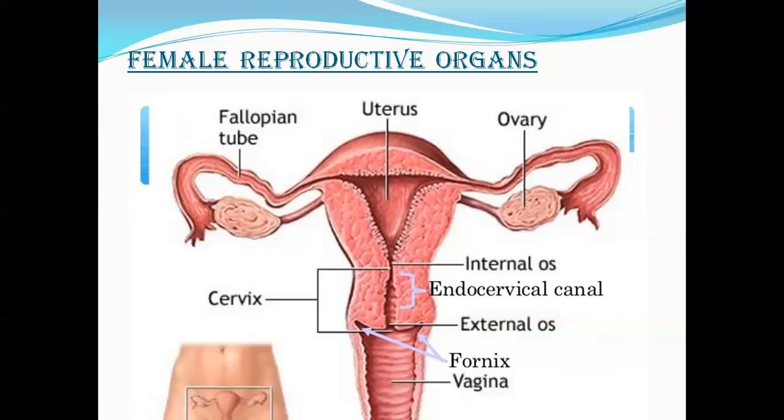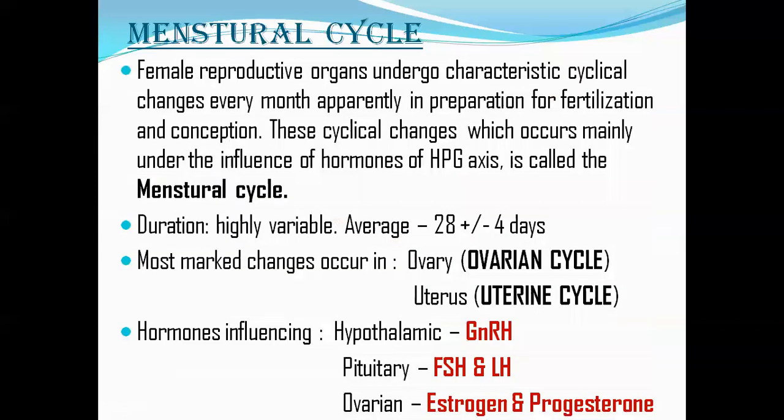The breast also undergoes cyclical changes with the menstrual cycle. The menstrual cycle is the most important monthly event in a female's reproductive life, during which different reproductive organs undergo characteristic changes teleologically in preparation for fertilization and conception. These cyclical changes occur mainly under the influence of the HPG axis — the hypothalamo-pituitary-gonadal axis. The hormones influencing it are hypothalamic GnRH, pituitary FSH and LH, and ovarian estrogen and progesterone.